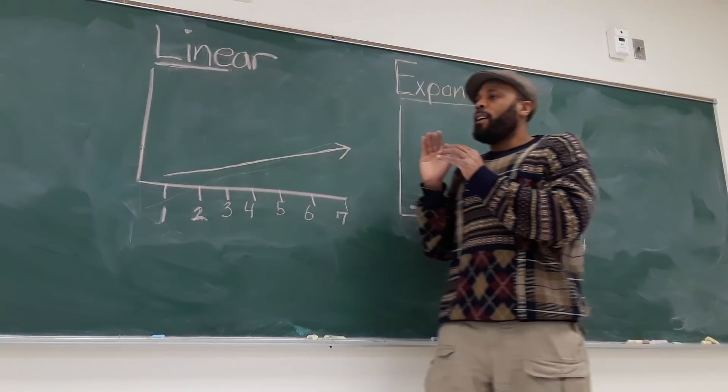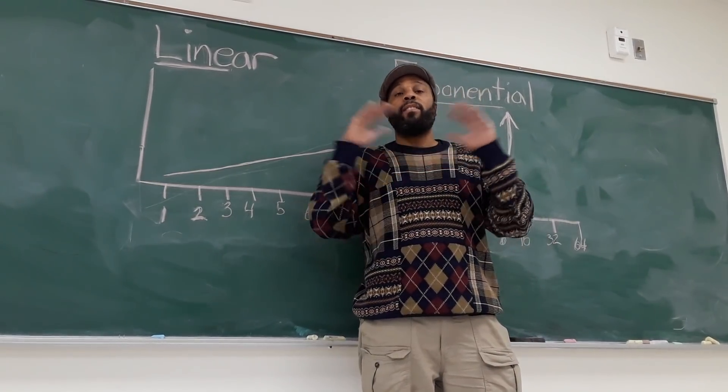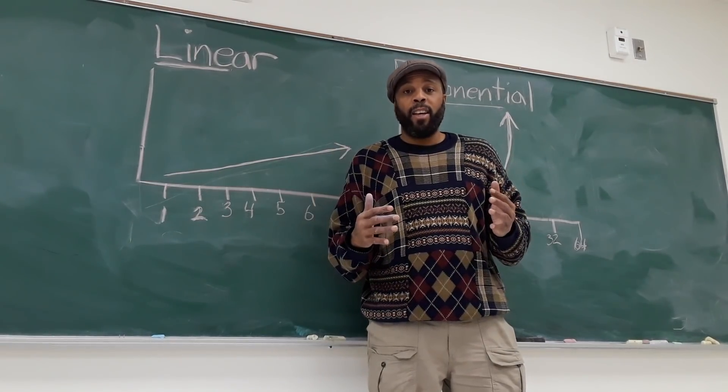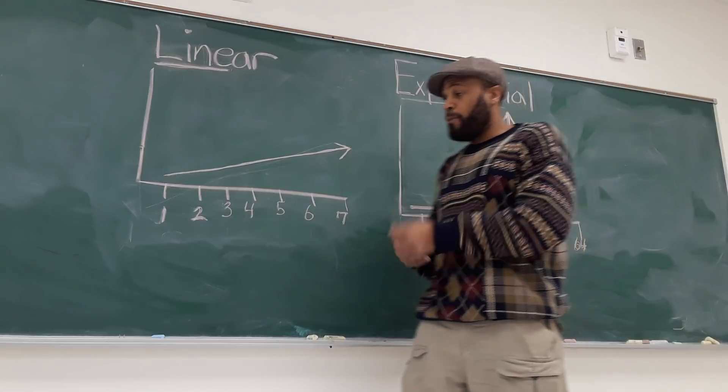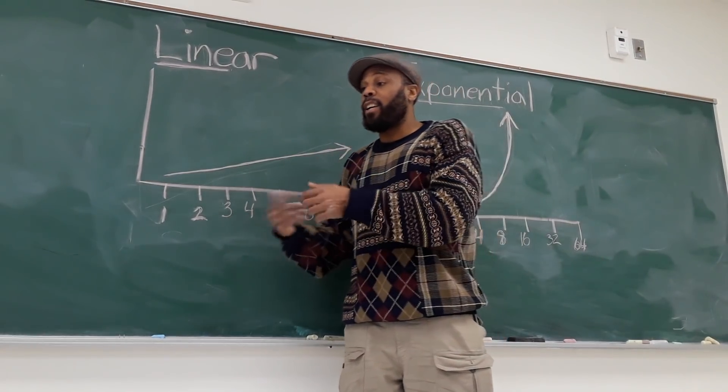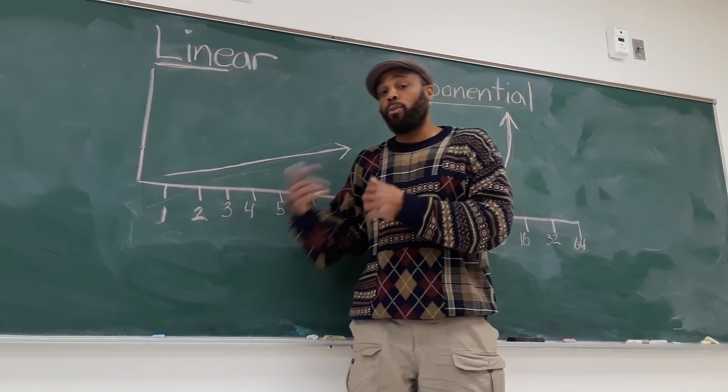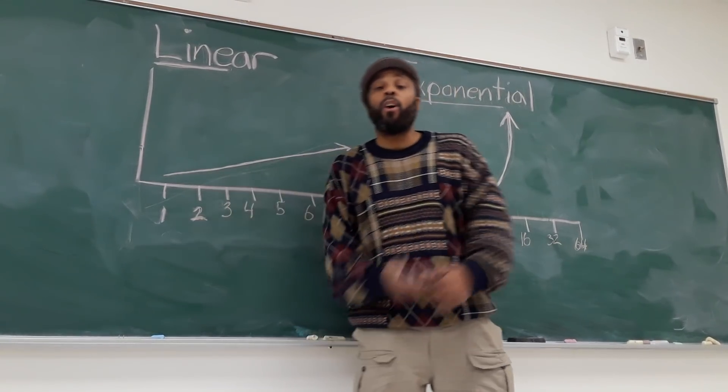So what's important to understand is you oftentimes have people who are in positions of power who not only function according to an exponential growth model, but then they feed people linear growth models and regulate their growth and development to keep them in control in order to utilize their work for their own enrichment.